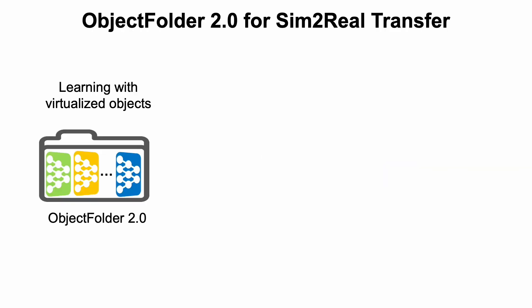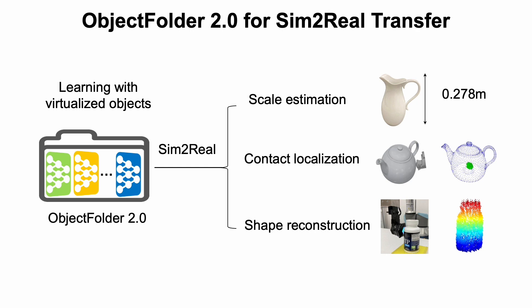Another important improvement compared to Object Folder 1.0 is that while Object Folder 1.0 only performs tasks in simulation, we show that learning with our virtualized objects generalizes to real-world counterparts on three challenging tasks, including object scale estimation, contact localization, and shape reconstruction.